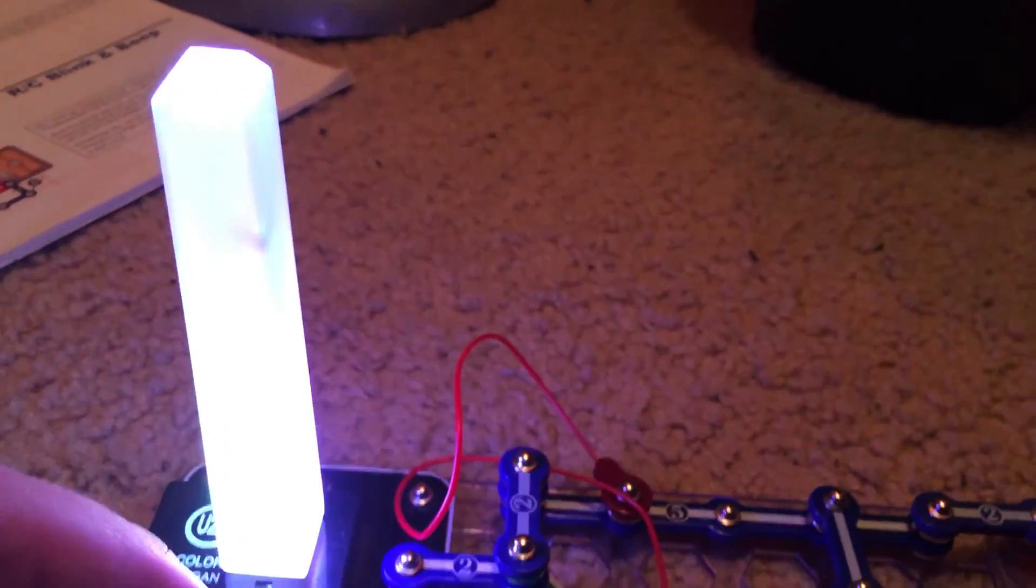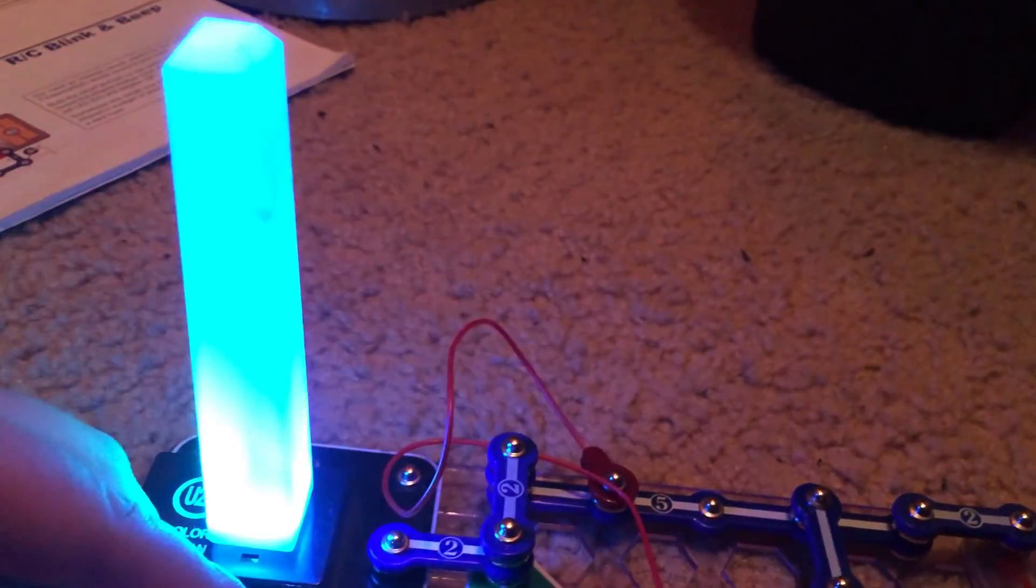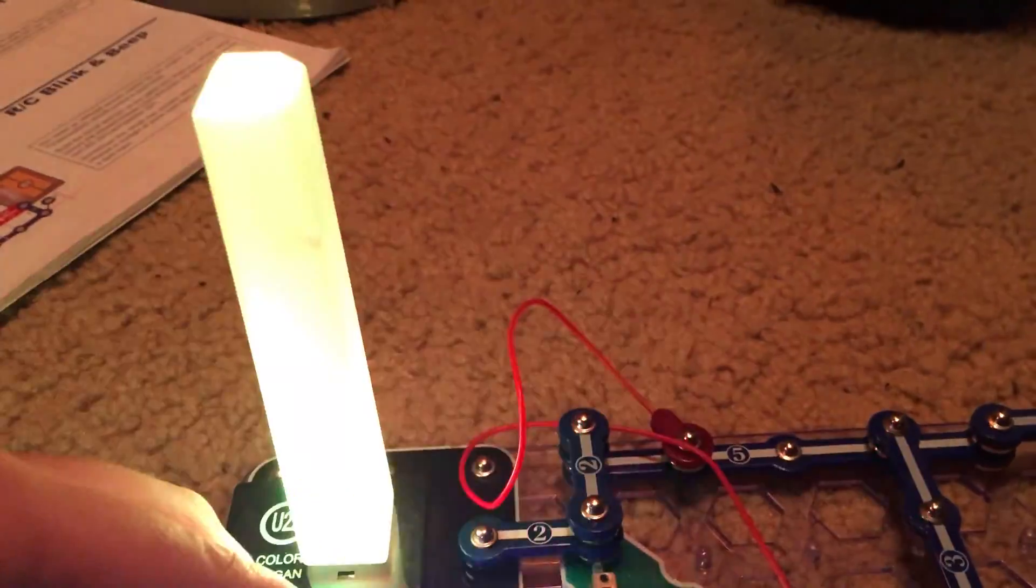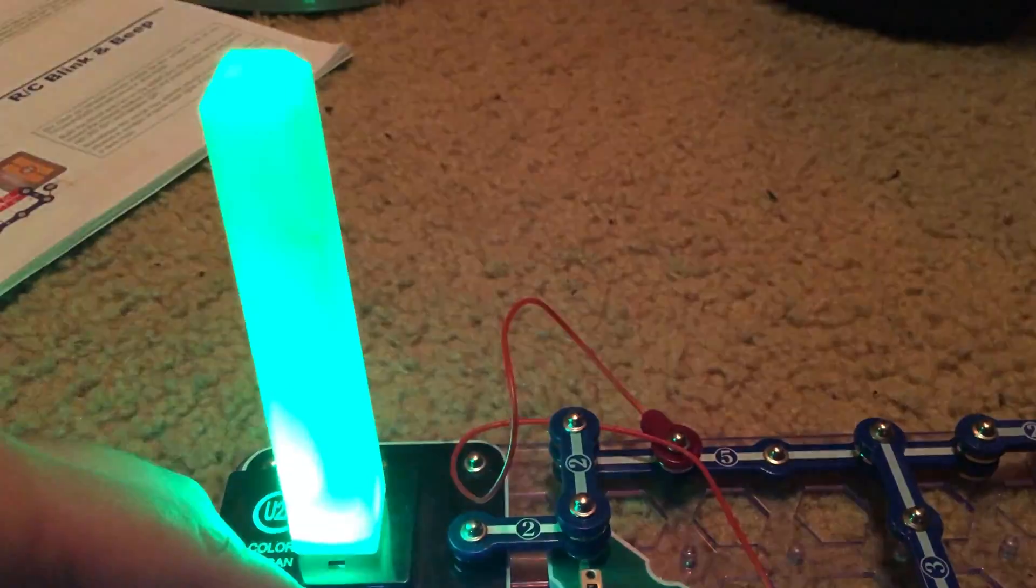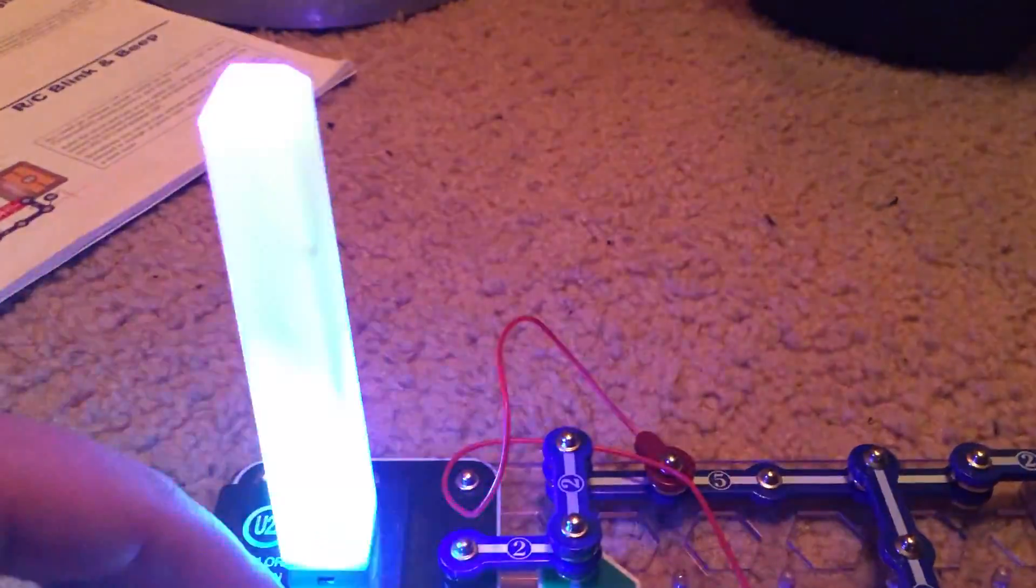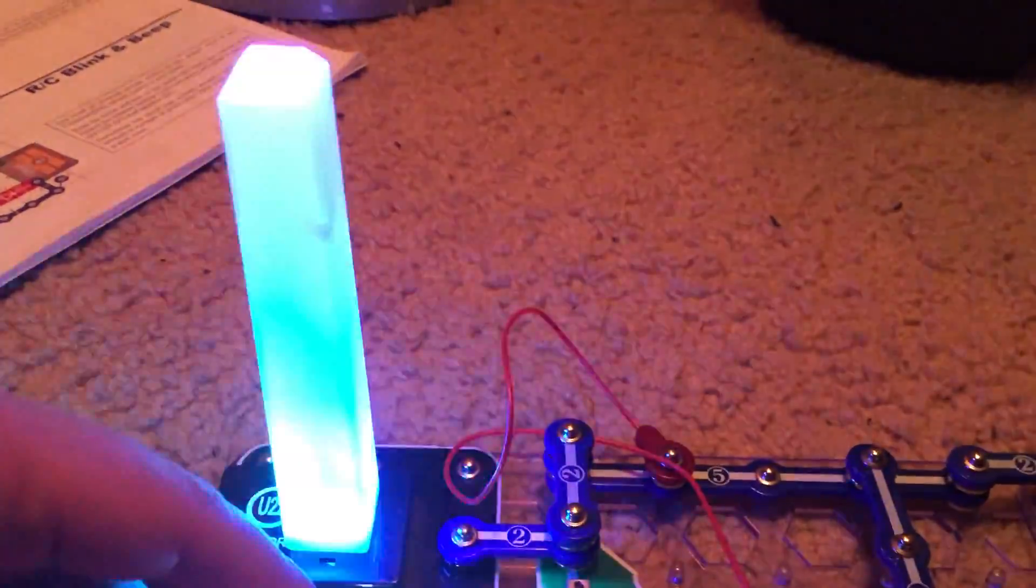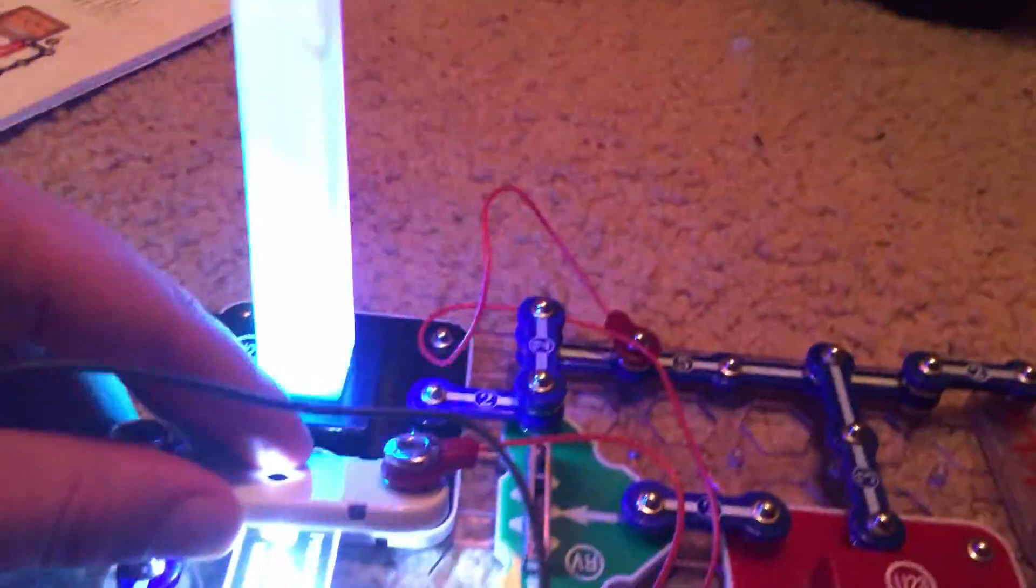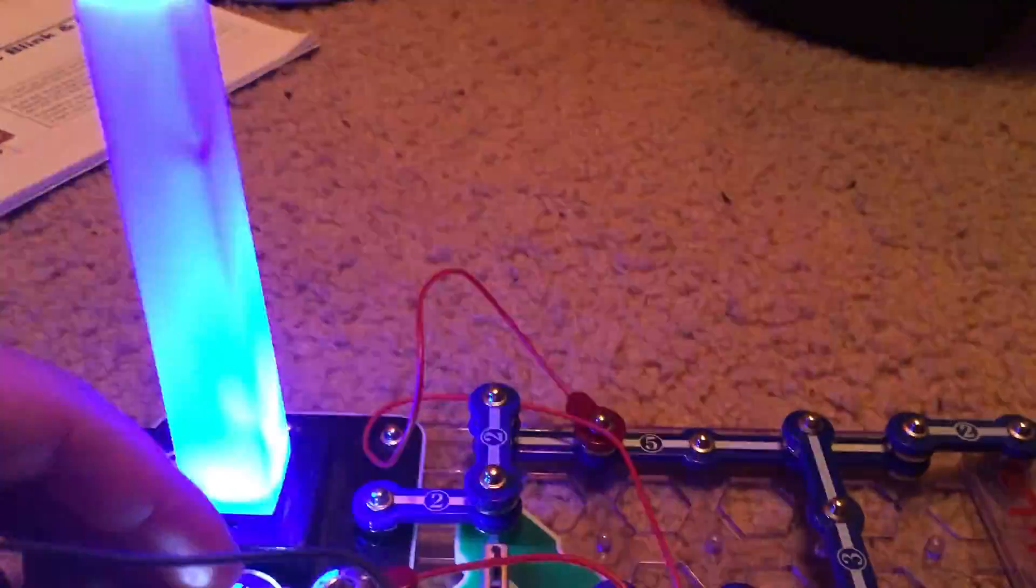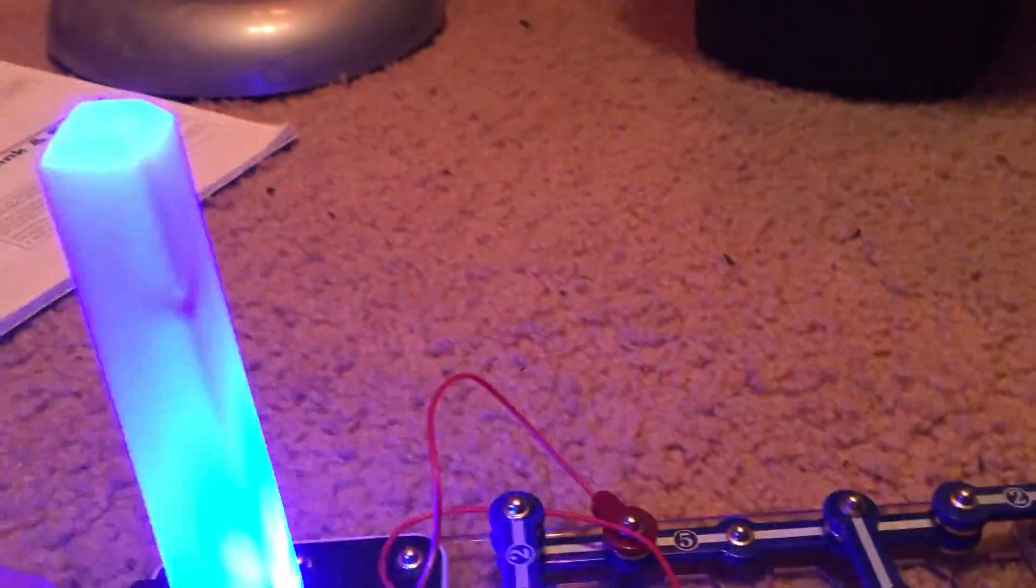And now the colors change faster because the white LED is flashing at a much quicker rate. Even though the resistor is only half way. Now we will move it all the way up and look at how quickly the color organ switches colors now.